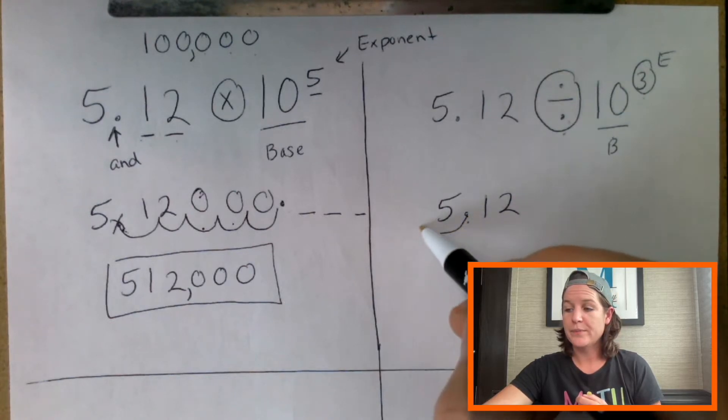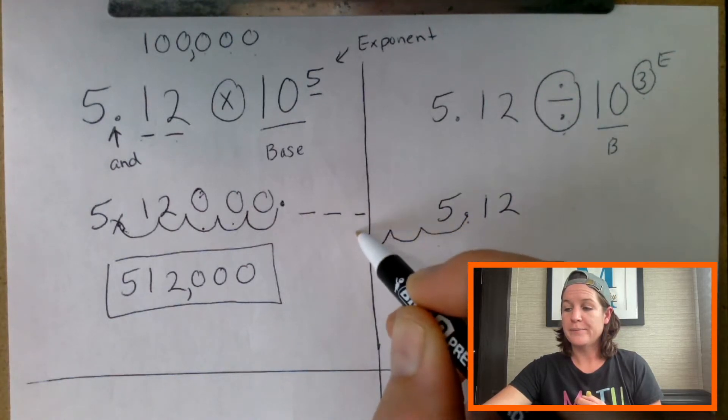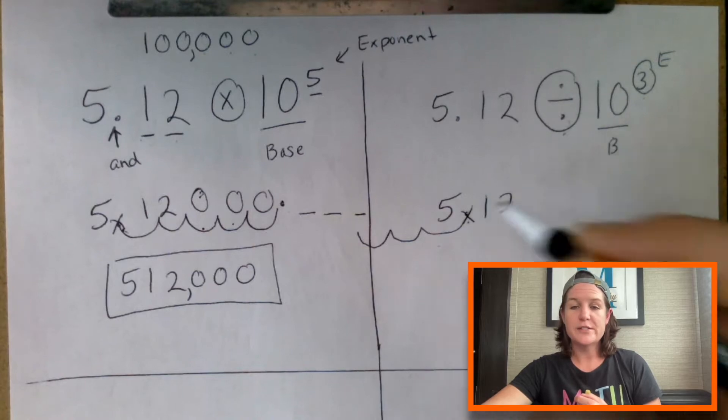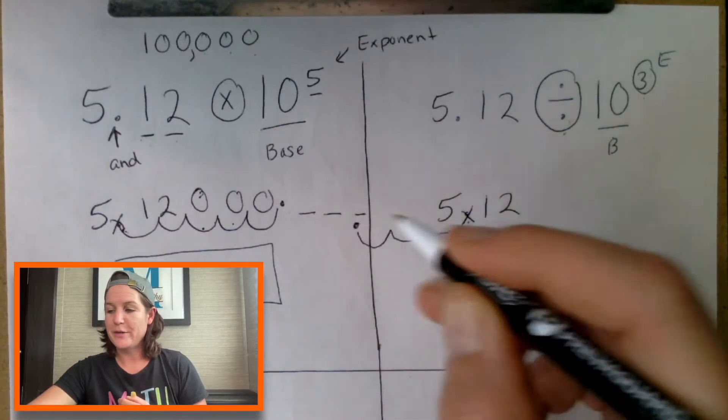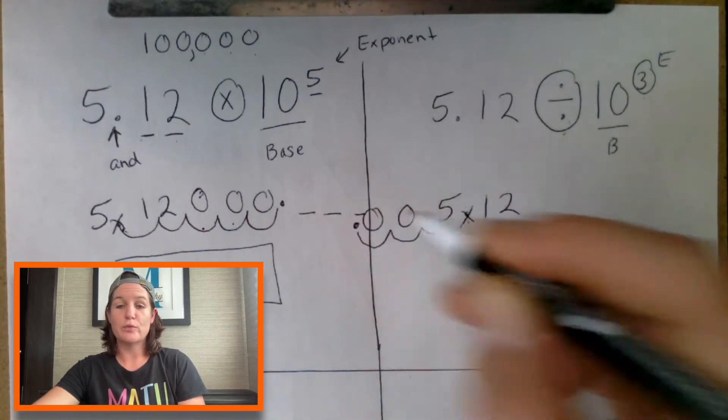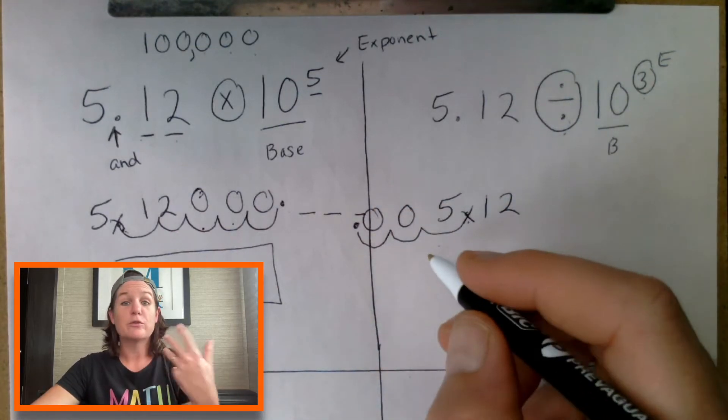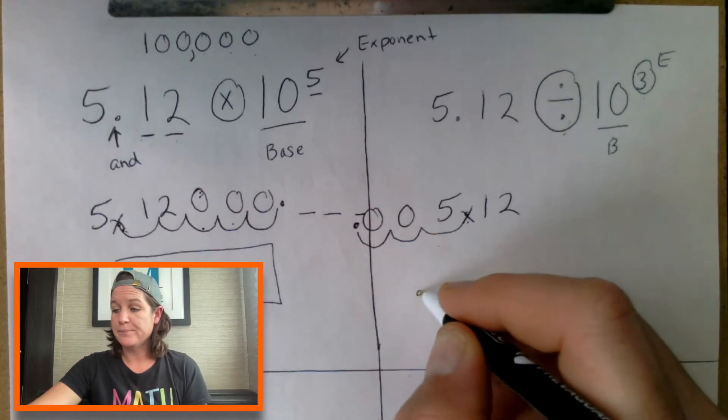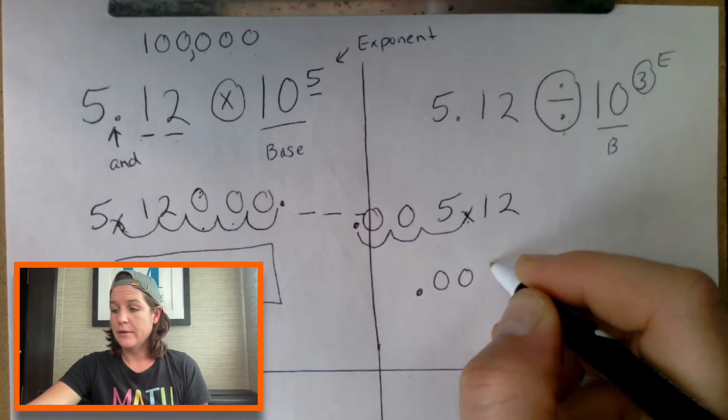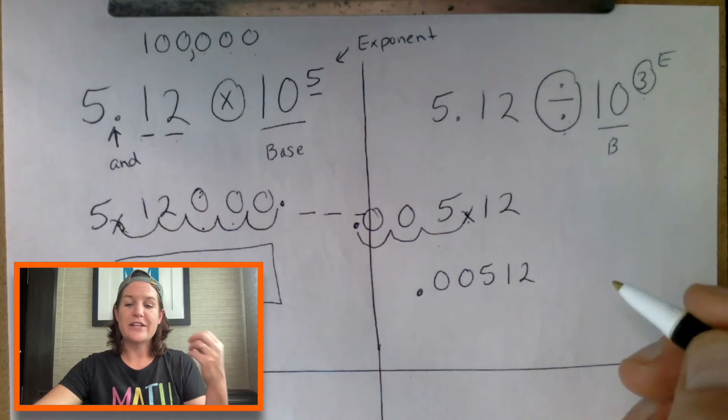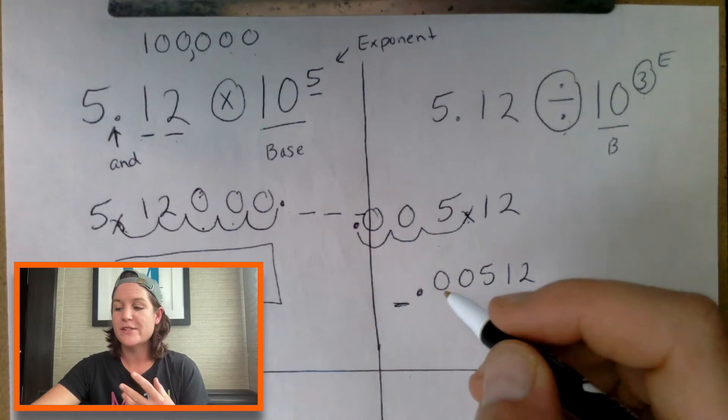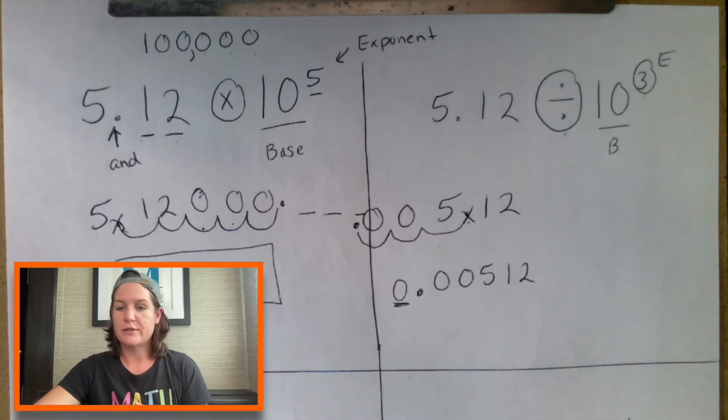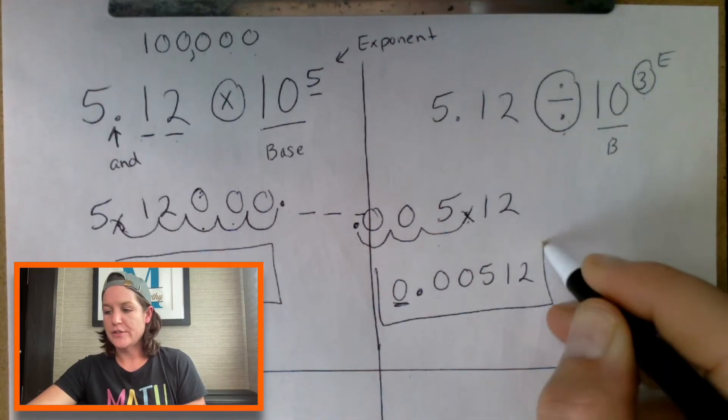Five and 12 hundredths, our decimal's right here. We're going to shift our decimal to the left three times. Here we go: one, two, three. Out with the old decimal and in with the new. We can put zeros right there in the spaces. And again, we need to rewrite. I usually tell students that if there's nothing in the whole number place, the ones place, to put a zero there too. So this would be your answer for that one.